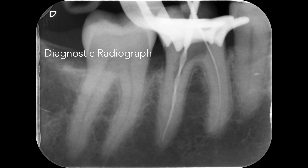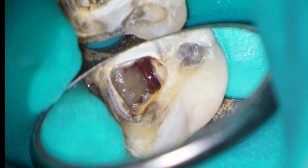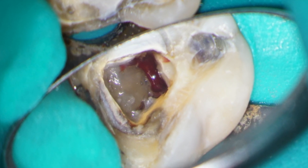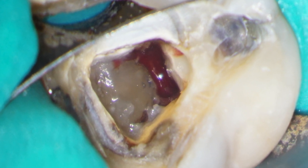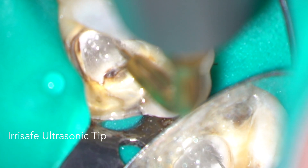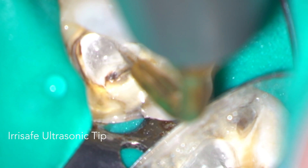A diagnostic working length radiograph was exposed to confirm the working lengths. Preparation was completed with a primary reciprocating instrument — this has a size 25 tip and a variable taper. The distal canal is bleeding quite heavily, and this is something that you'll commonly find with internal resorption cases where the tooth is still vital. Inflamed and bleeding pulp tissue was removed using 3% sodium hypochlorite agitated with an IRA safe ultrasonic tip.